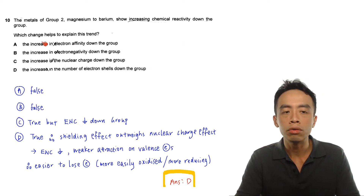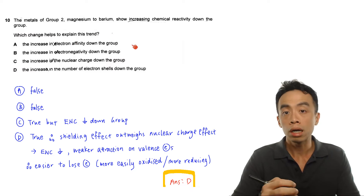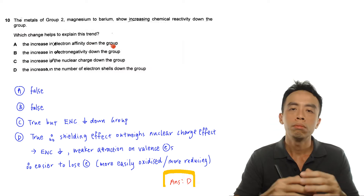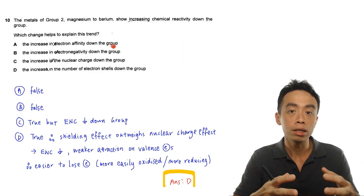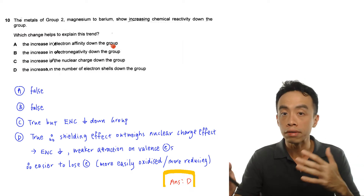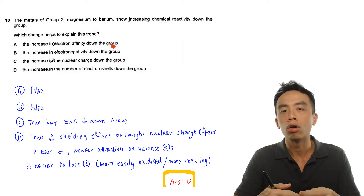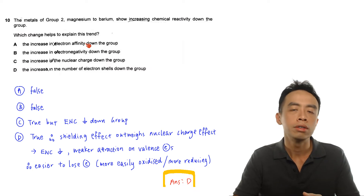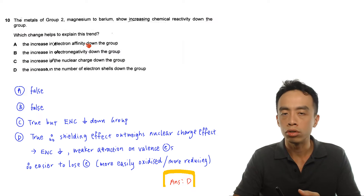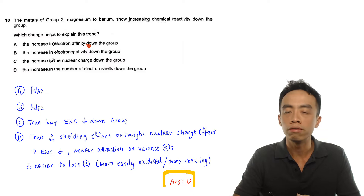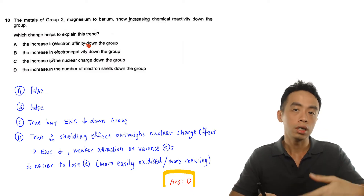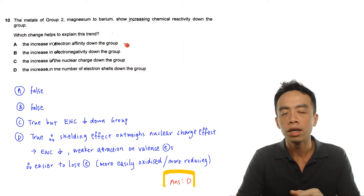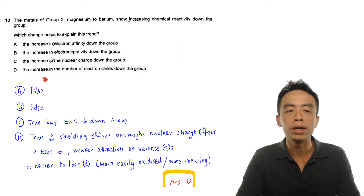Let's look at Option A: the increase in electron affinity down the group. This statement is false. As you go down the group, there are more principal quantum shells and the atom gets bigger. The valence electrons are further away from the nucleus, so there will be weaker attraction on the electron. Electron affinity decreases down the group — even for non-metals like halogens in Group 17. So Option A is absolutely wrong.